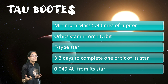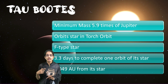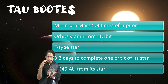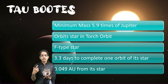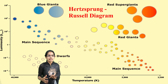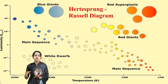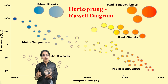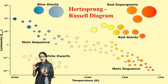Another interesting fact about Tau Boötis is that it is an F-type star. If we talk about the Sun, it is a G-type star. The F-type star has a higher temperature compared to the G-type star, and it takes nearly 3.3 days to complete one orbit of its star. Before we understand the F-type star further, we need to know the Hertzsprung-Russell diagram, also known as the HR diagram.